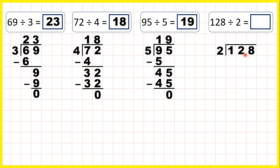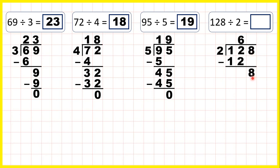Well 12 is in the 2 times table, so we can write 12 underneath. And because 12 is 6 times 2, we can write 6 in our answer line. Now we subtract, so 12 minus 12 is 0, so we don't need to write anything, but we do need to bring down this 8.